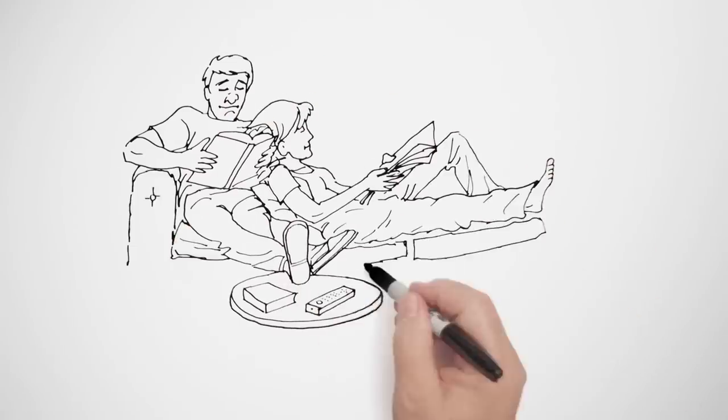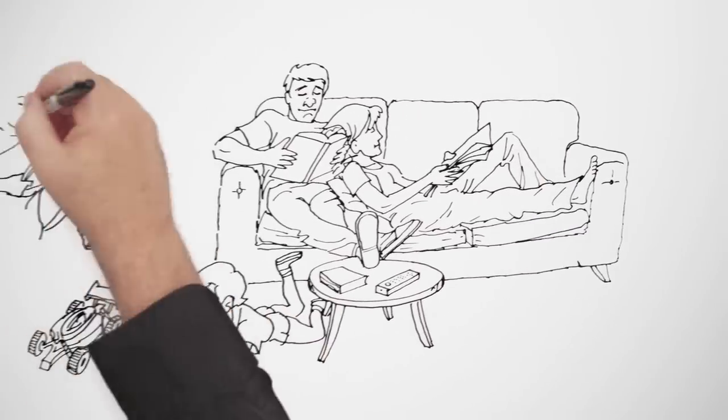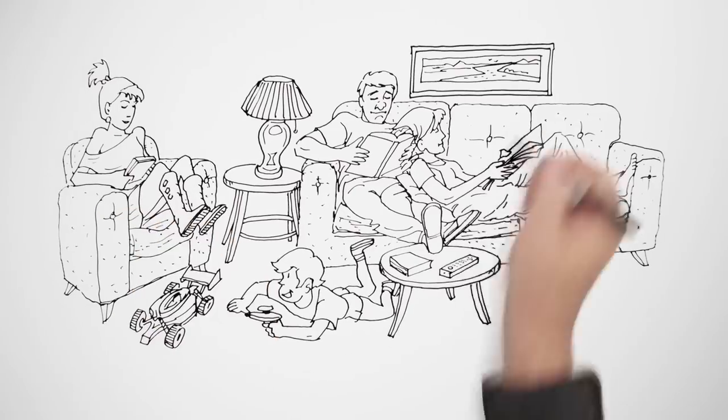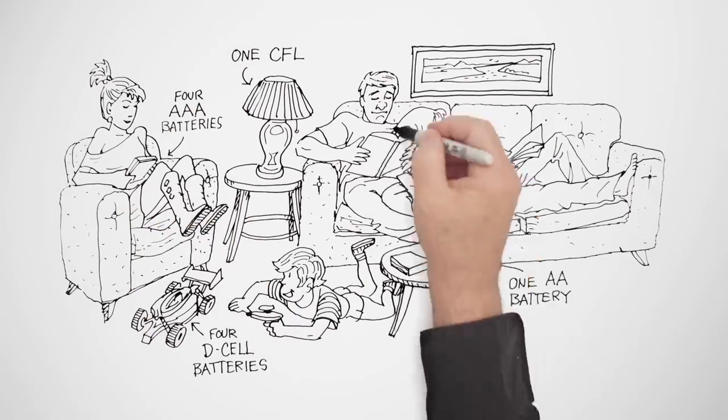We depend on electricity for so much, but whether the flow of electrons is through a battery-powered toy or game, or through the many fluorescent light bulbs that brighten our homes, eventually we end up with a number of dead batteries and burnt-out CFLs.